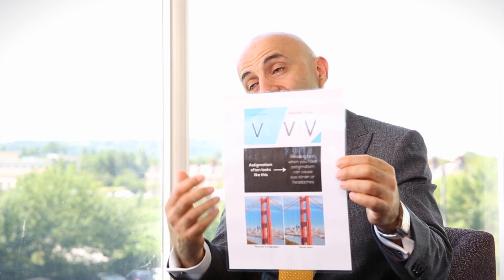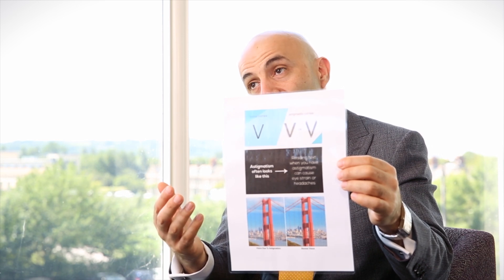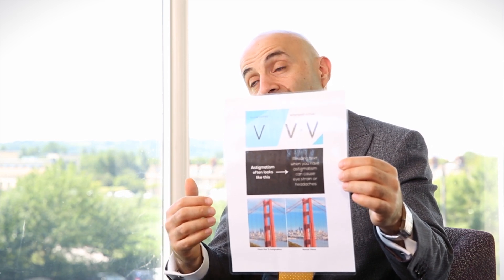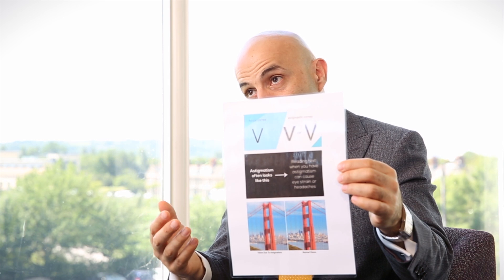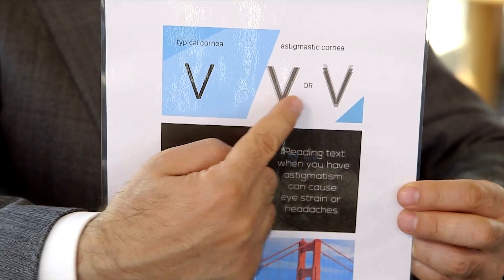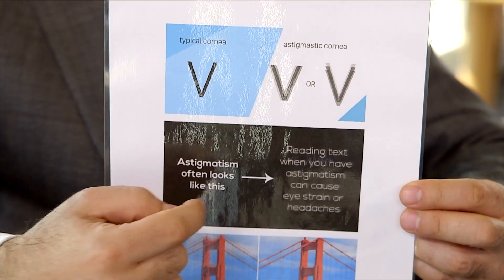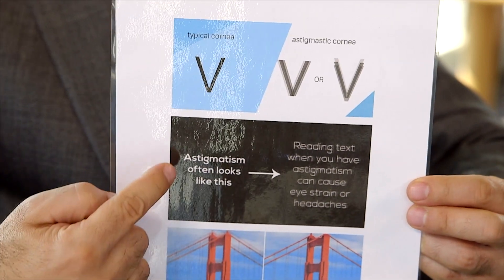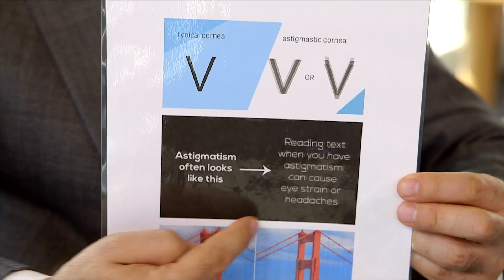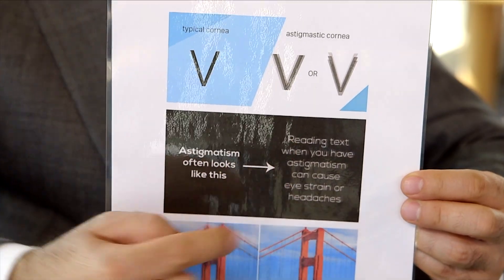If a patient has astigmatism which is not corrected with glasses or a contact lens, or if they have astigmatism and choose not to have a toric lens after the surgery, their vision will look like this — unless a toric lens is used internally to correct the astigmatism as part of the surgical procedure.